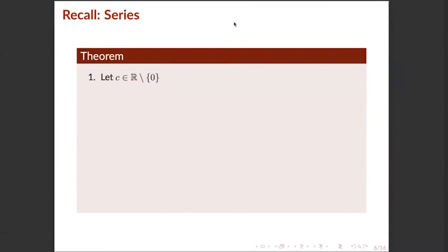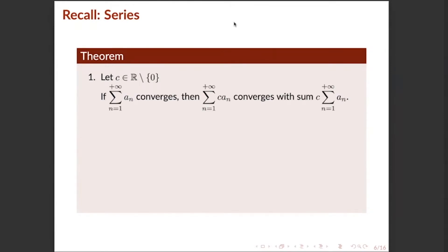Next is a theorem regarding the convergence and divergence of series. First, for all non-zero real numbers c, if a series a_n converges, then the series of the product c times a_n also converges. The sum of that series equals c times the sum of a_n. If a_n diverges, then the series of c times a_n also diverges.